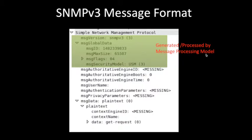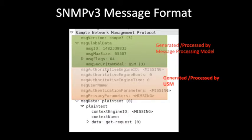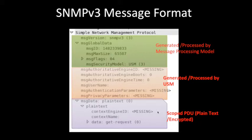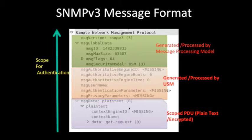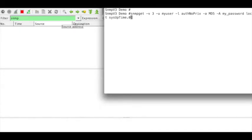The first block is generated by the message processing model. The next block — authoritative username, authenticity, and privacy parameters — is generated and processed by the USM, User Security Model. The scope PDU contains the message data, which can be plain text or encrypted. The whole packet in version 3 is scoped for authentication.